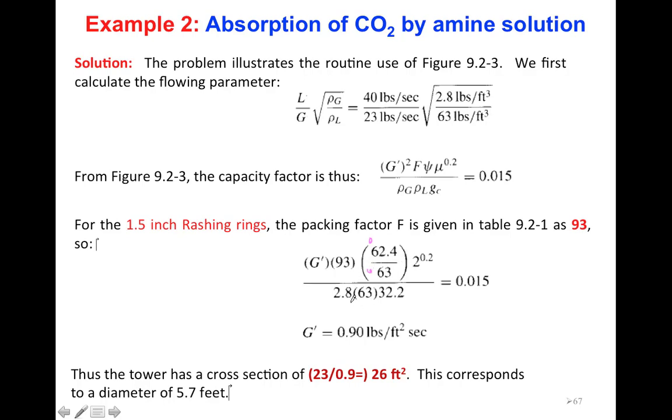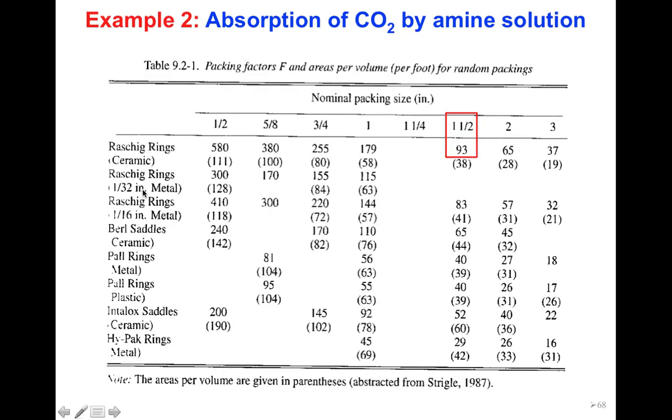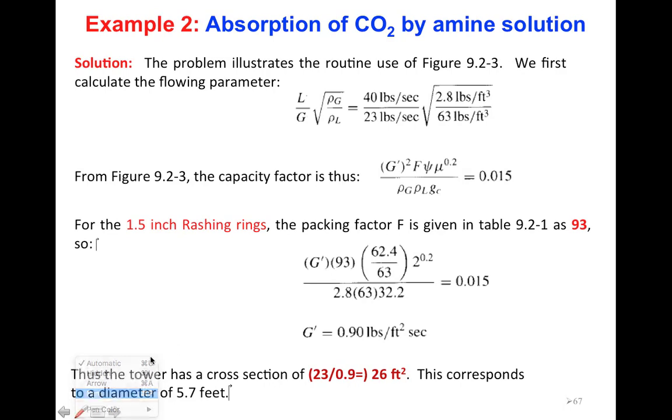ρg and ρl, the densities are given. Gravitational acceleration in English system is 32.2. Viscosity was given 2, G' is missing, and packing factor. For packing factor, we have 1.5 inch Rasching ring. We have a table for that. This is the table that will be given to you. We have Rasching ring, which is ceramic. The size is 1.5, so the packing factor will be 93.